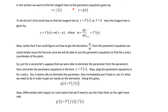We want to find the tangent lines to the parametric equations given by x equals f of t and y equals g of t. Recall how to find the tangent line to y equals F(x) at the point x equals a. The tangent line is given by y minus the y-coordinate at a equals the slope m times (x minus a). The slope is the derivative dy/dx evaluated at x equals a, written as F′(a). Notice that if we could determine dy/dx from the parametric equations, we could reuse this formula, using the parametric equations to find the x and y coordinates.